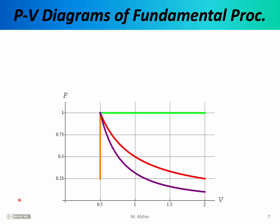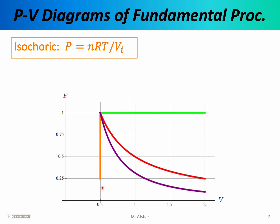As mentioned earlier, we like to describe thermodynamic processes using PV diagrams, which give us a concise and complete description of how the gas is being manipulated. Those four fundamental processes are depicted on a PV diagram. The first of these — the vertical orange line — is a typical graph for an isochoric process. The gas starts in an initial state with an initial volume of 0.5 and an initial pressure of 1, then evolves to a final state where the volume remains at 0.5 because this is an isochoric process, but notice that the pressure has changed to 0.25.